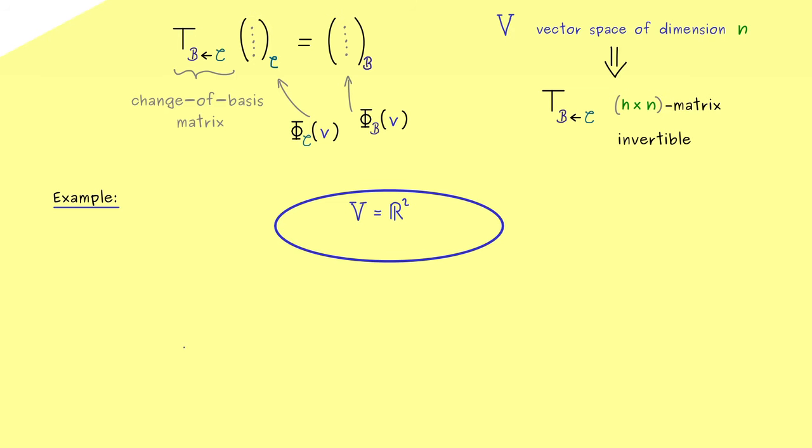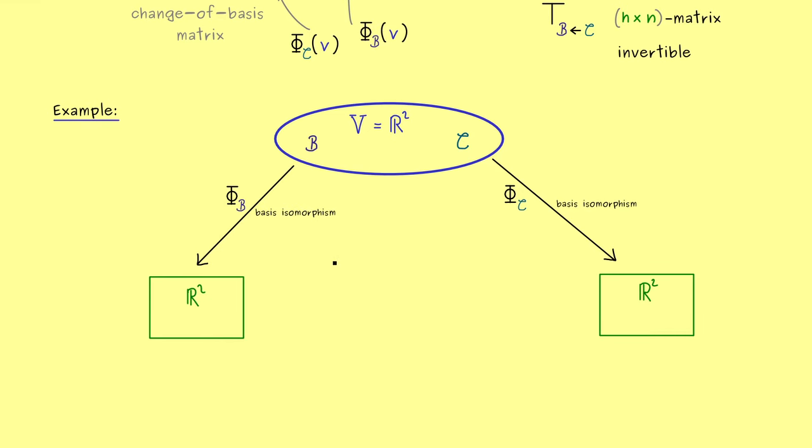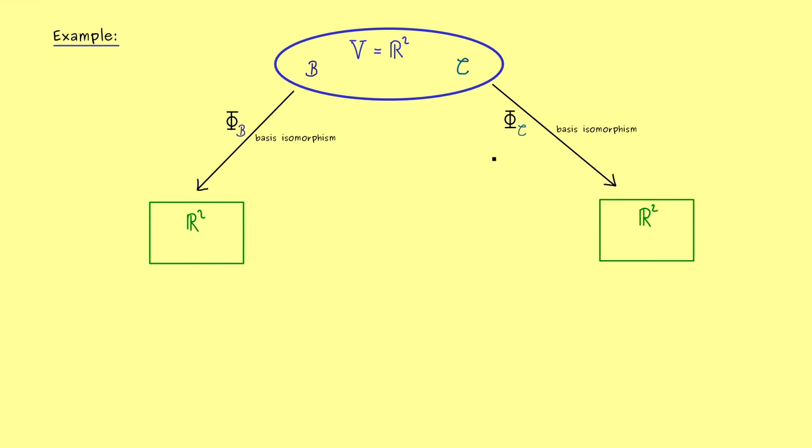However, the basis isomorphisms are still helpful to understand what is happening here. This means, if we have two bases given, we can still translate them to R^2 again. Hence we land in R^2 again, but now with the canonical basis. And as always, the corresponding basis isomorphisms are denoted by phi_B and phi_C respectively.